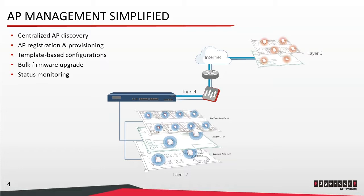And this is where tunnels come into the picture. By using the CAPWAP protocol to establish the tunnel between the controller and each of the APs, the APs can discover the controller and be automatically registered on the controller even when the APs are behind NAT. Then, AP templates can be configured on the controller so that the templates can be applied to multiple APs at the same time from the controller. This will save time and effort for network administrators. And bulk firmware upgrades and configuration backups can also be done in a few clicks.